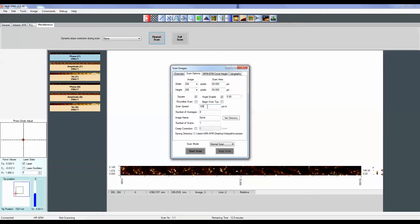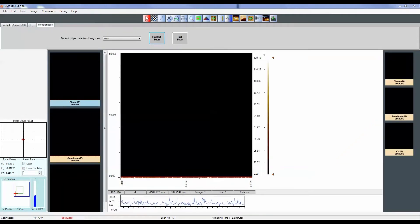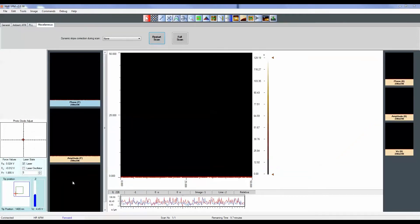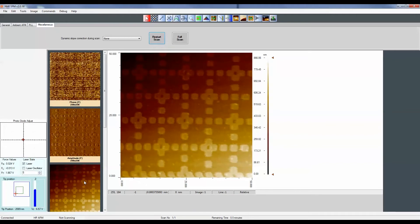To scan your sample, enter the desired parameters and hit the Start Scan button. After your scan is complete, you can post-process the images using the AFM software.